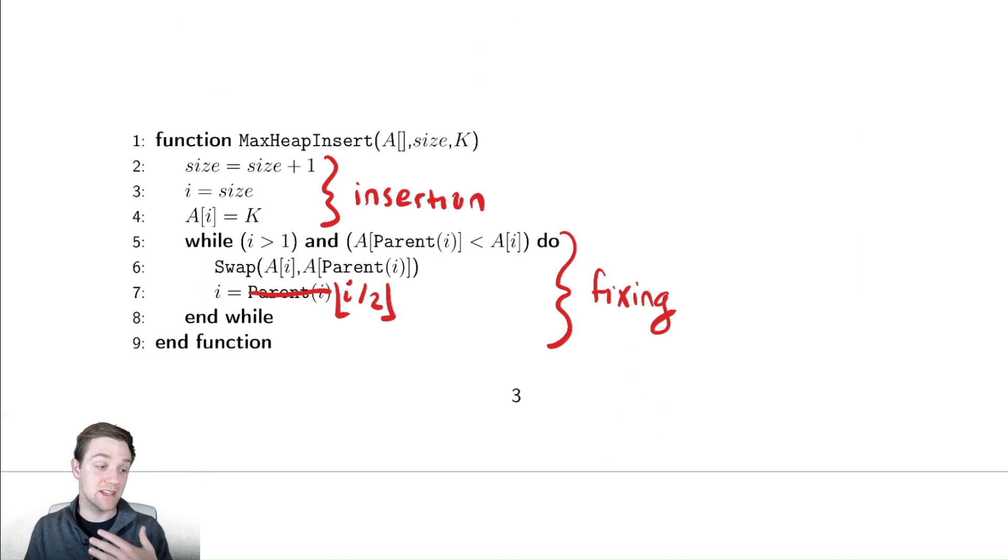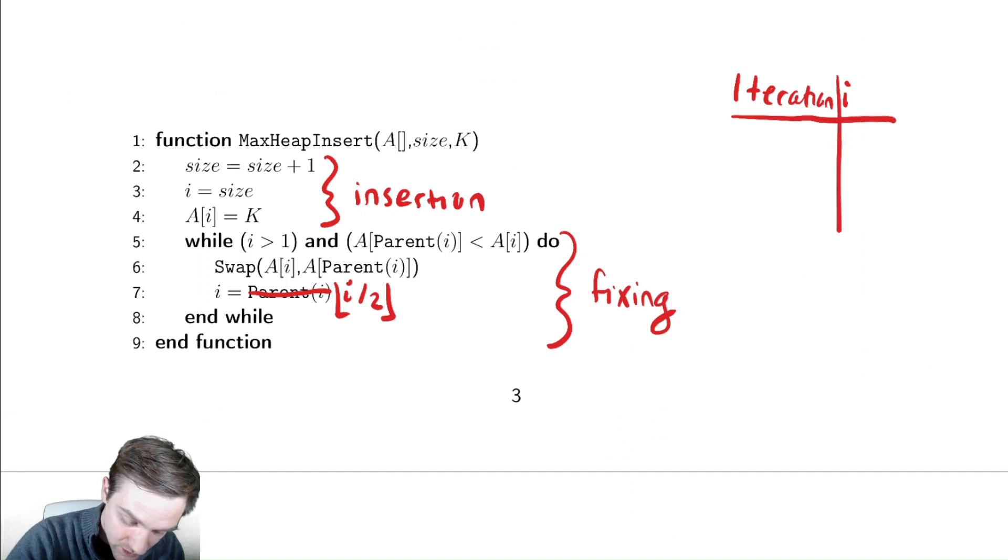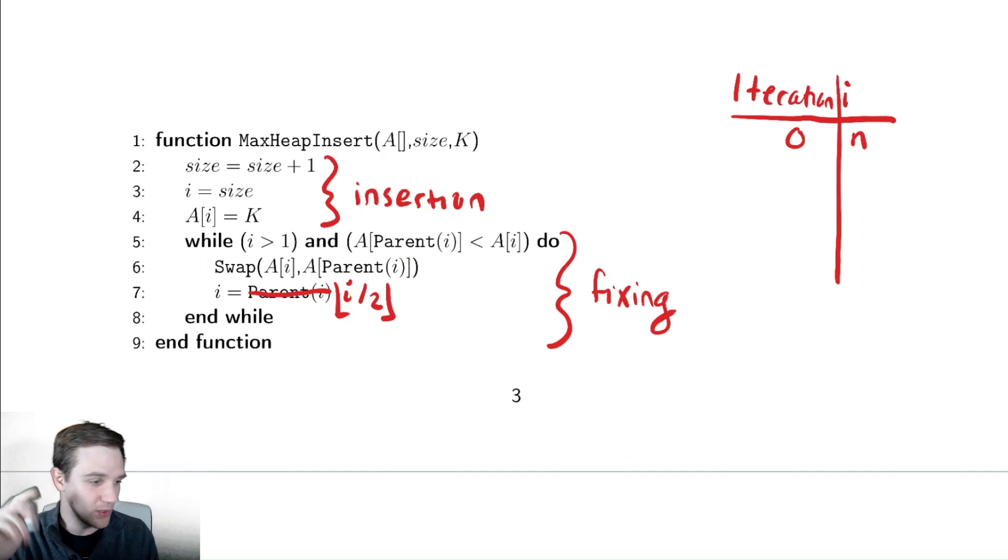And now let's analyze a worst case analysis of this. The worst case is that we run through this while loop all the way until we get to the root node. And I can analyze this while loop by saying, what value does i start at with an iteration table? Doing this, the starting value of i, let's say it's n, the number of elements. You could also say n plus one if you wanted to be a little more precise, but let's not do that.